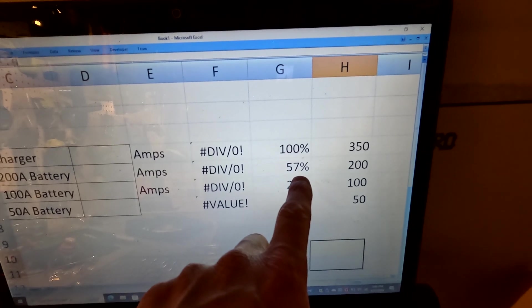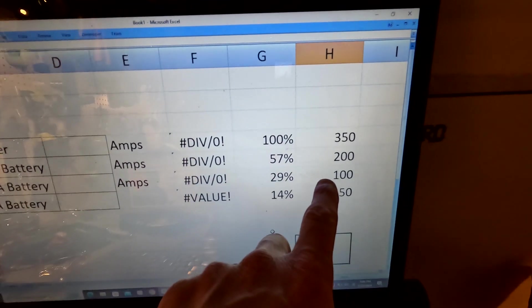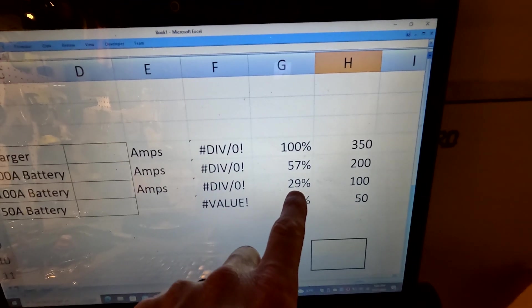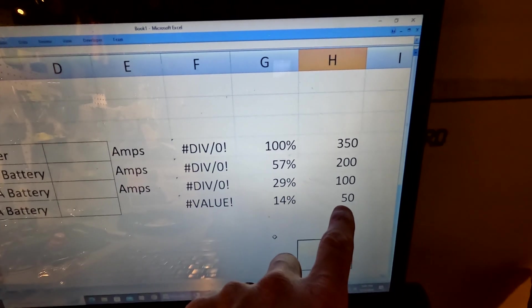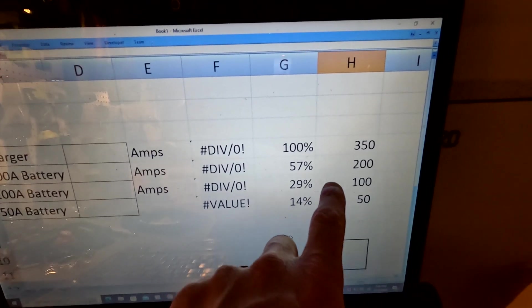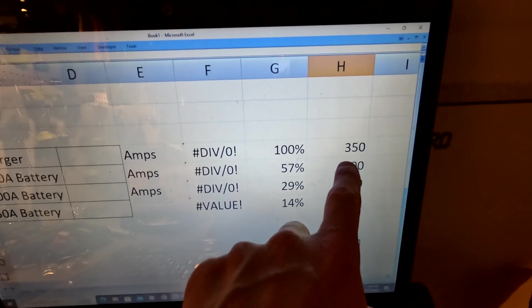200 is 57% of the total bank. 100 is 29% of the total bank. And 50 amp hours is 14% of the total 350 amp hour bank.